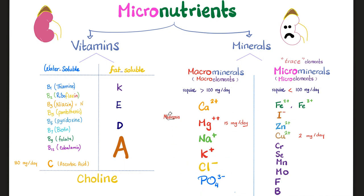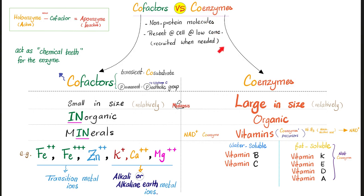Why do you call these macro and these micro? Because on average, there are exceptions, you need these in more than 100 mg per day. But as for this, you will need an amount less than 100 mg per day. As we have discussed before, vitamins are co-enzymes, but minerals are co-factors.